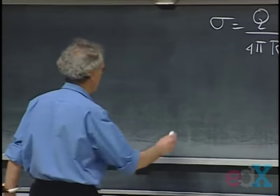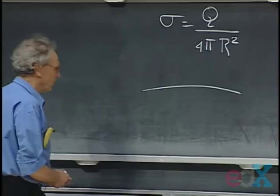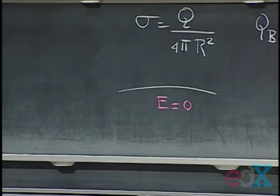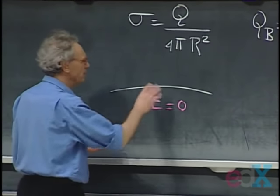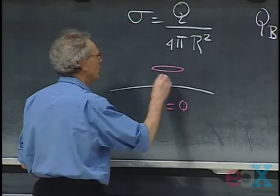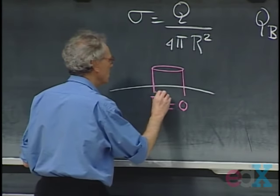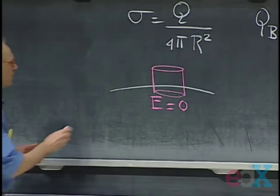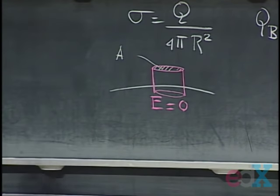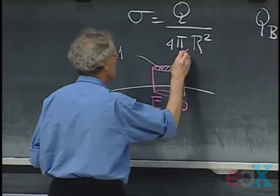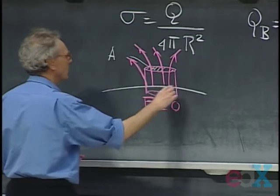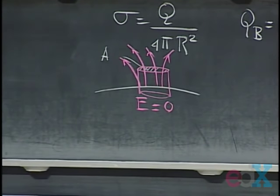That follows immediately from Gauss's law. If this is the surface of a conductor — any solid conductor — where the E field is zero inside, and there is surface charge here, I'm going to make a Gaussian pillbox. This surface is parallel to the conductor, going into the conductor. This is my Gaussian surface with area A. Let's assume positive charge so the electric field lines come out of the surface, perpendicular to the surface, always perpendicular to the equipotential.